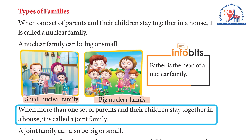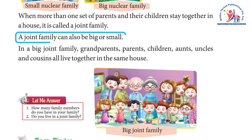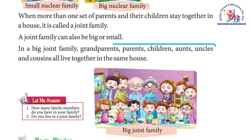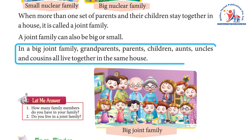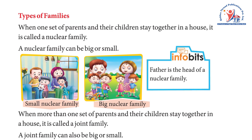When more than one set of parents and their children stay together in a house, it is called a joint family. A joint family can also be big or small. In a big joint family, grandparents, parents, children, aunts, uncles, and cousins all live together in the same house.